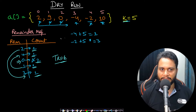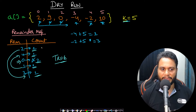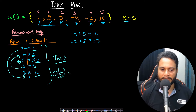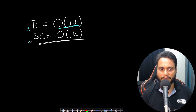Time complexity is O(n) since we iterate over all items exactly once and push into the map in O(1). Space complexity is O(k) because we have an entry for each possible remainder from 0 to k−1.